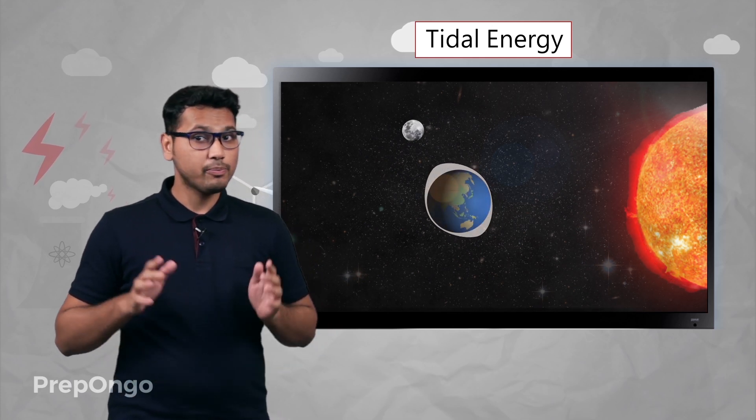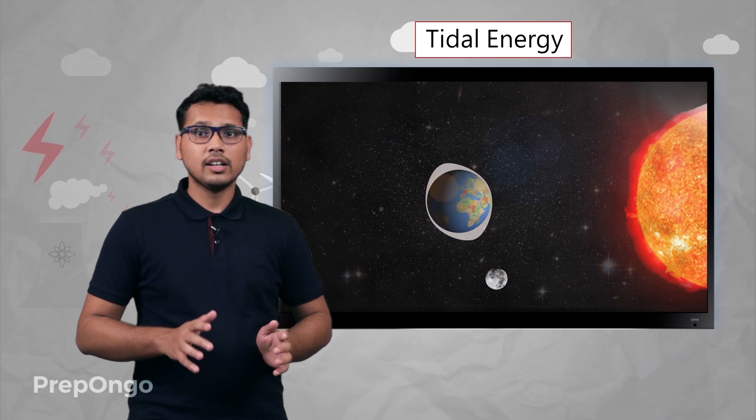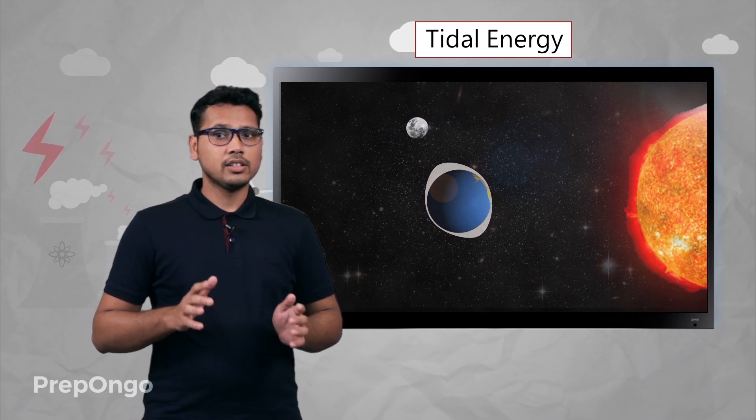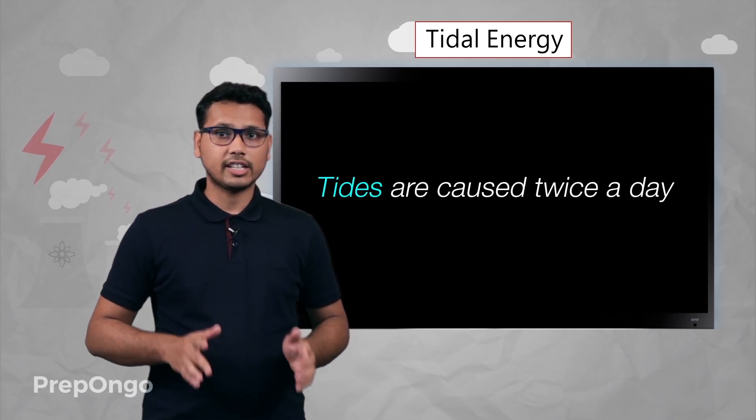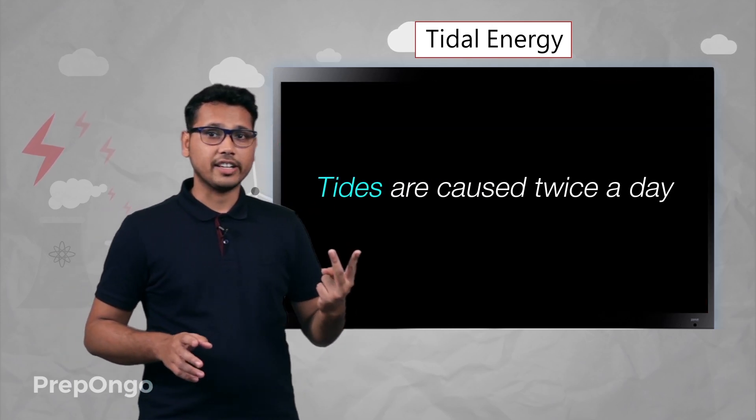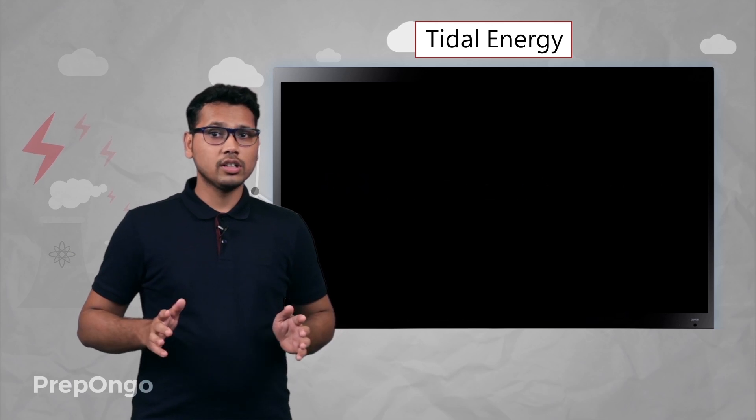Now when the pull is strong, there is high tide, and when the pull is weak, there is low tide. This effect causes the tides to happen twice a day. So we can use the energy from the tides to generate electricity. Let us find how.